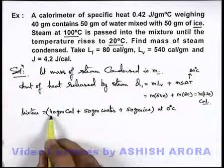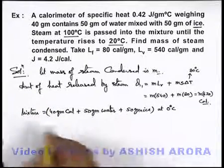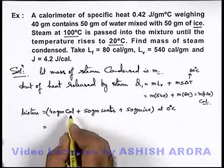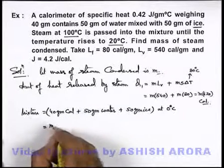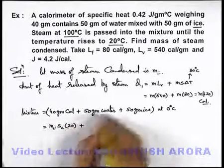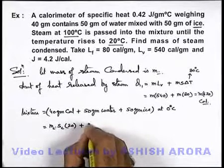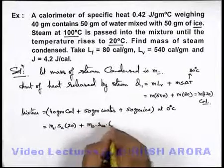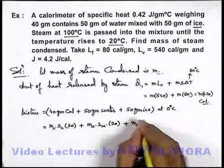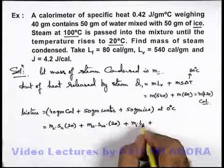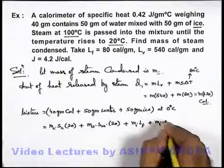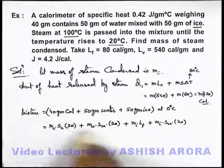When the whole system raises its temperature by 20 degrees, the calorimeter raises its temperature by 20 degree centigrade, so we write: mass of calorimeter times specific heat of calorimeter times 20, plus mass of water times specific heat of water times 20, plus mass of ice times latent heat of fusion, plus after melting, mass of ice times specific heat of water times 20.